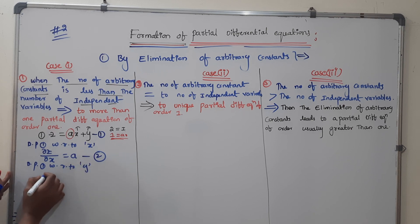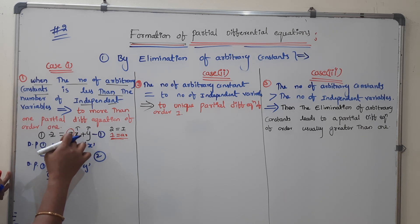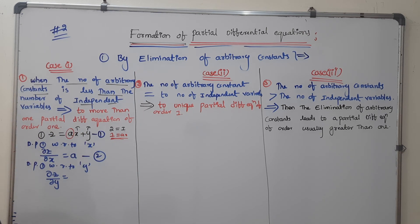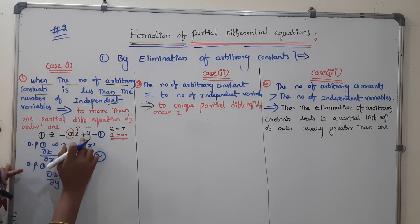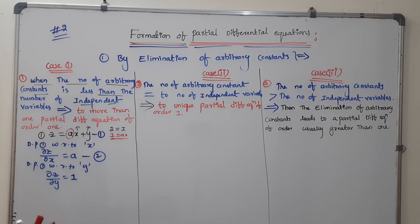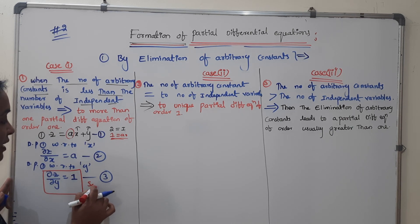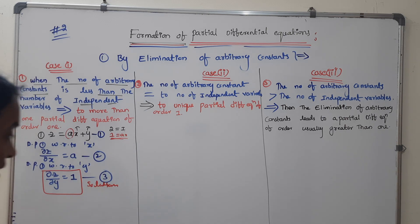Then differentiate equation 1 partially with respect to y: dou z by dou y is equal to b, since x terms are constants (value 0) and y differentiates to 1. This gives equation 3. Here there are no more arbitrary constants. Both equation 2 and equation 3 are solutions.